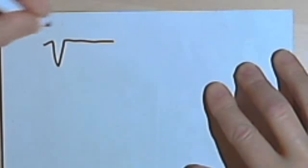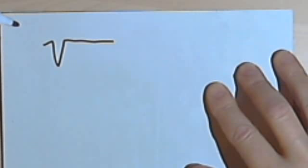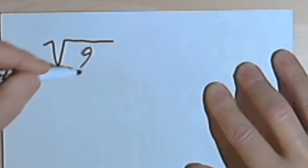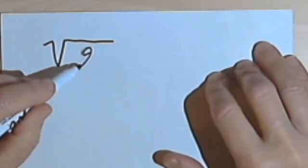So let's start with the square root sign. Actually, officially this is called the radical sign. And I'm going to put a 9 under there. So that means I want the square root of 9. The number underneath the radical sign, by the way, is called the radicand.